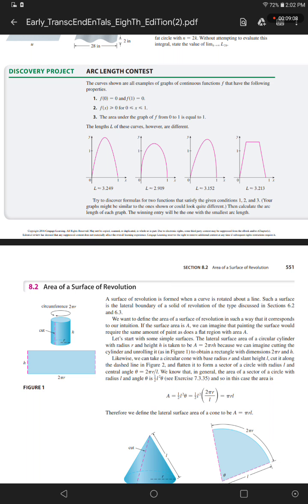Where L is approximately equal to 3.249, where L is approximately equal to 2.919, where L is approximately equal to 3.152, and L is approximately equal to 3.213. Try to discover formulas for two functions that satisfy the given conditions 1, 2, and 3. Your graphs might be similar to the ones shown or look quite different. And calculate the arc length of each graph. The winning entry will be the one with the smallest arc length.